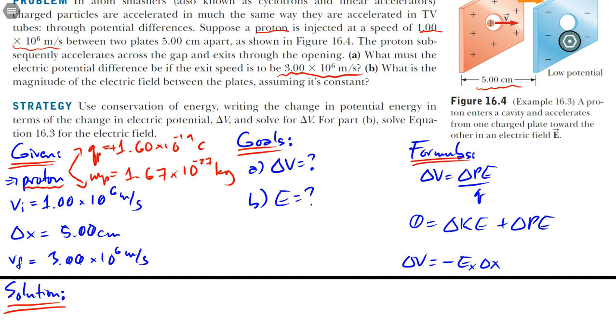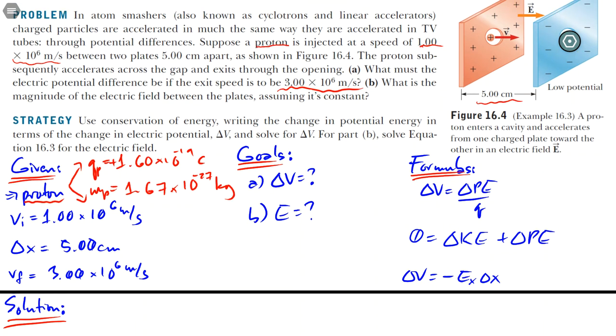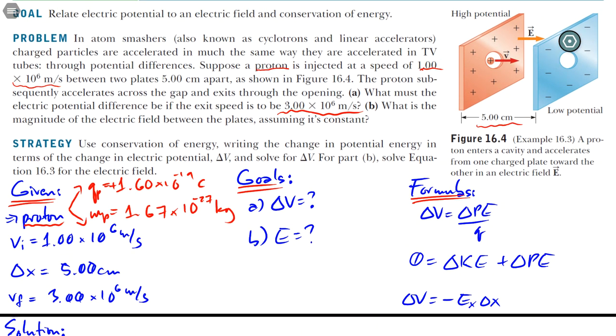Then we have the initial speed, delta x, final speed. We can actually solve this using a kinematics equation, but the purpose of this problem is to show how electric potential, which is related to electric potential energy, can be solved in terms of energy equation from physics 1. And what we're looking for is how much electric potential difference will be needed to accelerate the proton to that final speed.